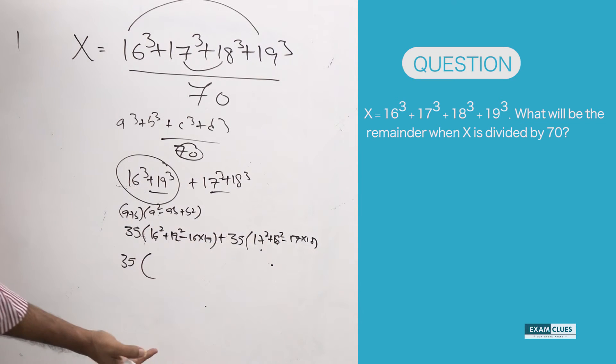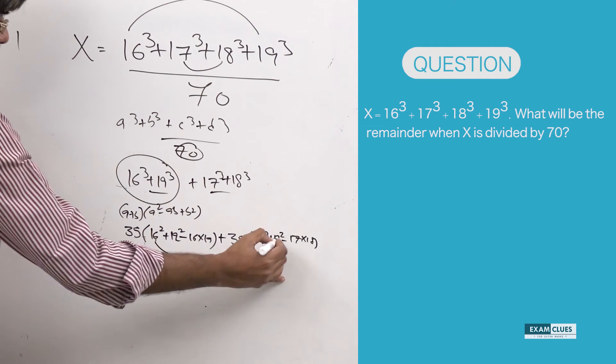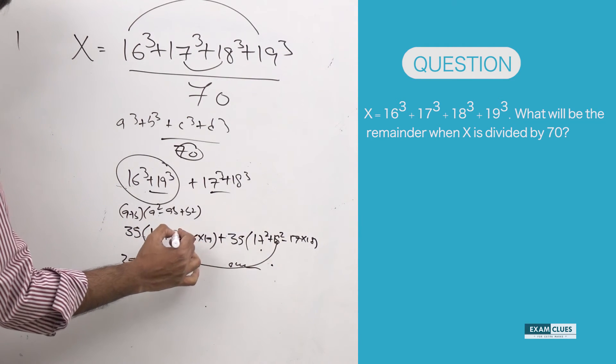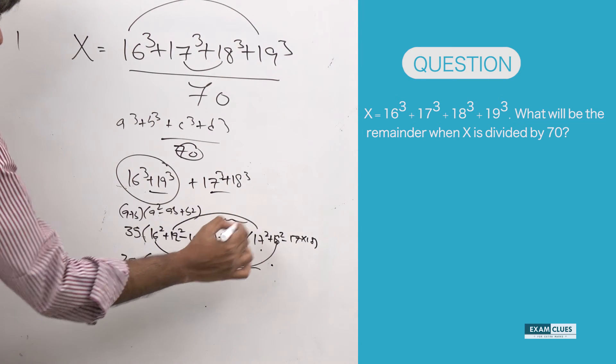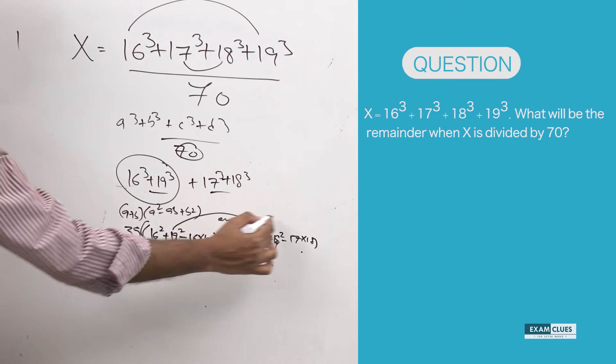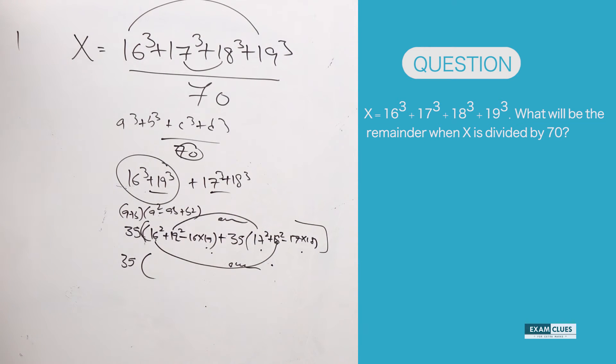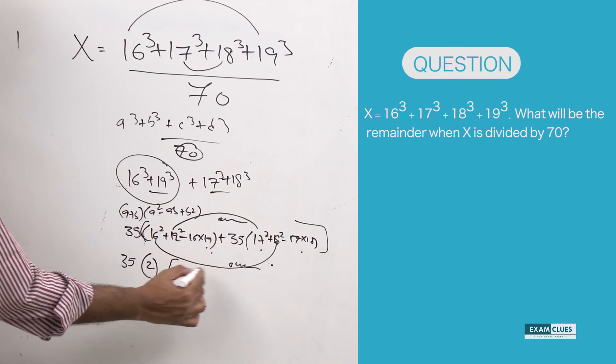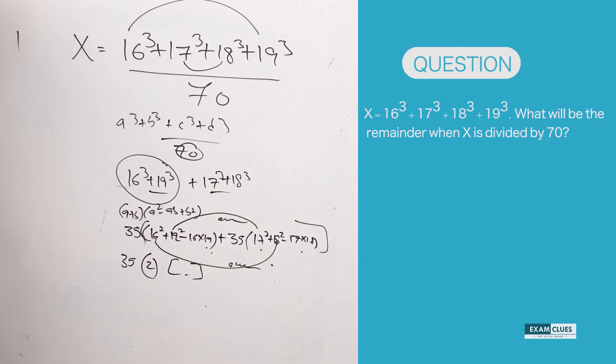So, what this will yield? Even. What this will yield? Even. These two are again even numbers. So finally, this whole resultant will be even. That means definitely I can take out 2 from the remaining part. So that means this number is a multiple of 70.